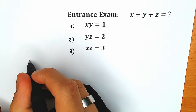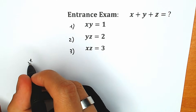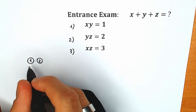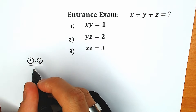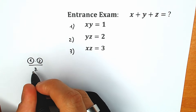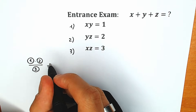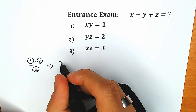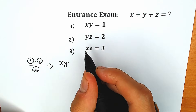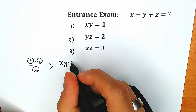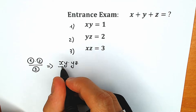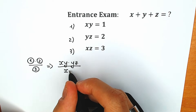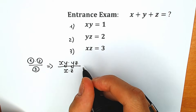What I mean is we're going to multiply the first equation times the second equation, and divide it by the third equation. Let's see what will happen. We have this combination: first equation xy times second equation yz, and we're going to divide it by the third equation, x times z.